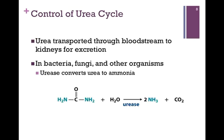Urea is then transported through the bloodstream to the kidneys for excretion. Some organisms, such as bacteria, fungi, and others, have an enzyme known as urease, which can convert urea to ammonia and excrete it directly from the cell. These are simpler organisms, and we do not have this enzyme as mammals.